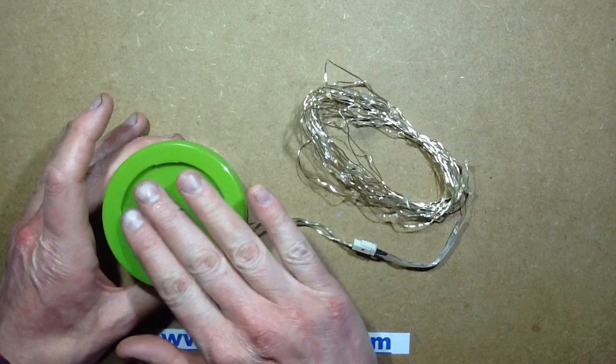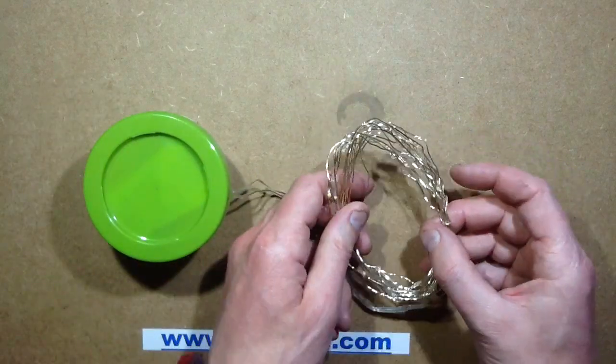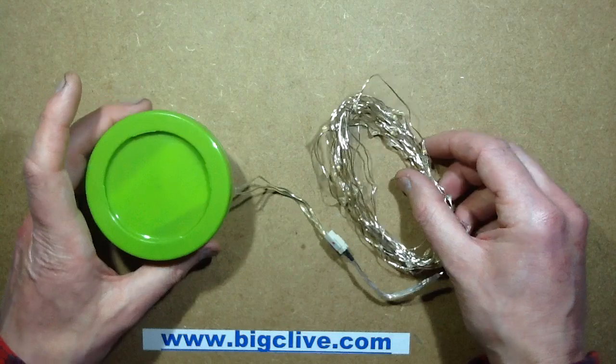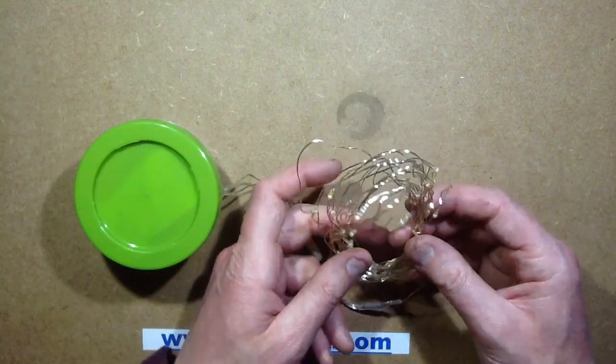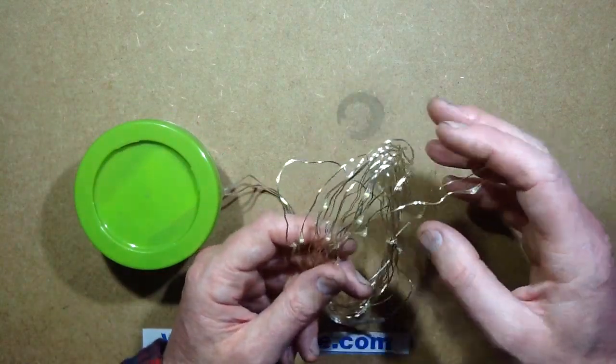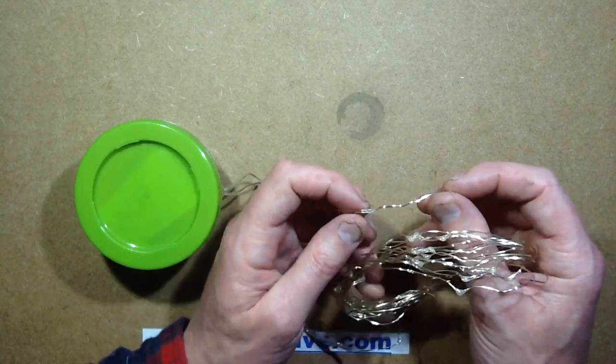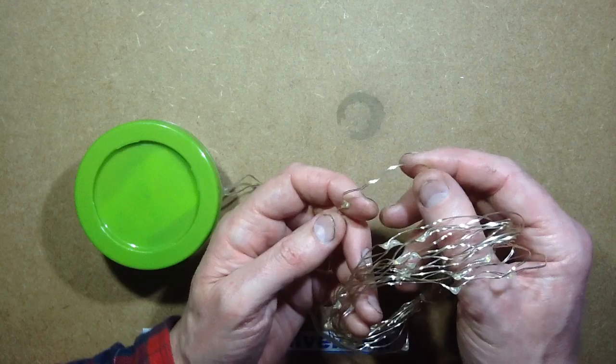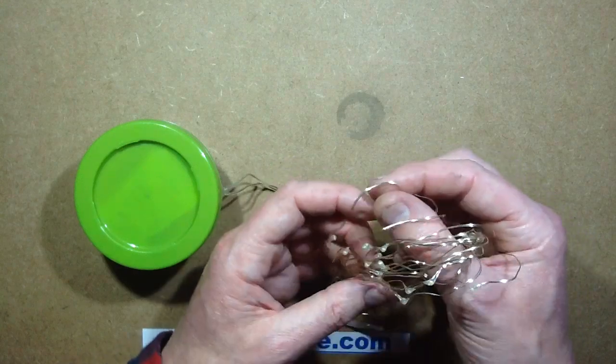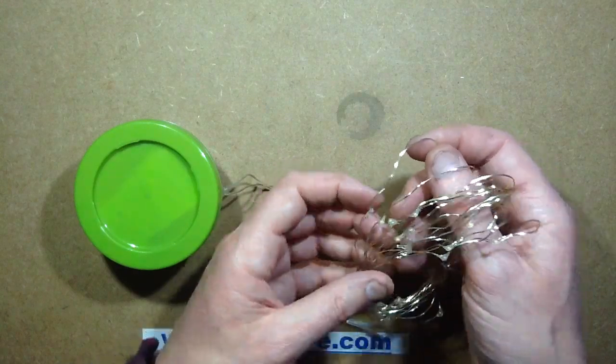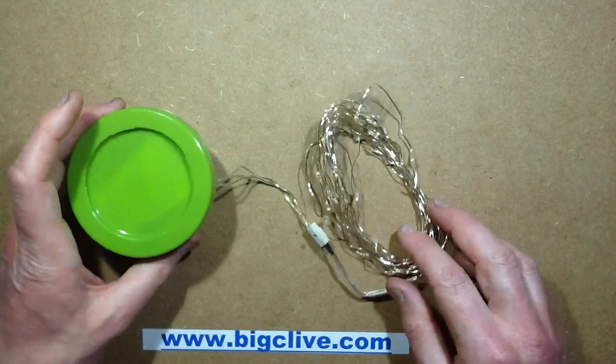I dug out this old module that I built a while back, which is a battery-operated lighting controller, and I've connected some of these neat little genuinely waterproof resin lights where the LEDs are all bonded in parallel across some thin copper wires.